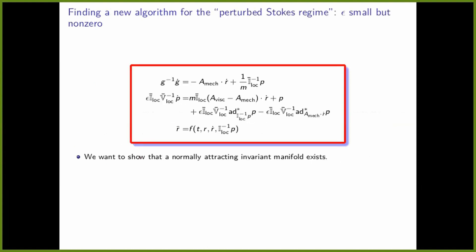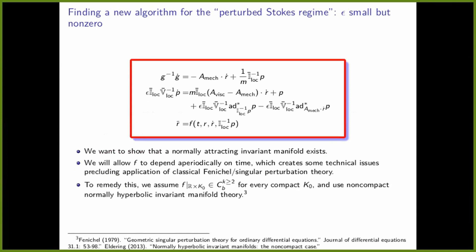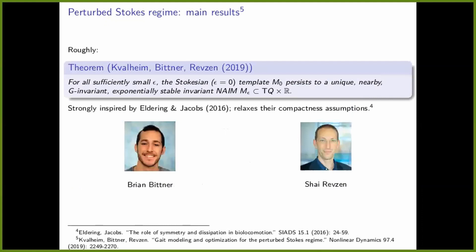We can extend the model using the NIM theory — just using the persistence result mentioned earlier. For epsilon small but not zero, we want to show that a normally attracting invariant manifold — a NIM — exists. There are some technical details about time dependence, but if you assume the robot is moving its limbs without growing unboundedly over time, you can prove that for all sufficiently small epsilon, the invariant manifold from the epsilon-equals-zero system persists to a unique nearby exponentially stable invariant NIM with nice properties.